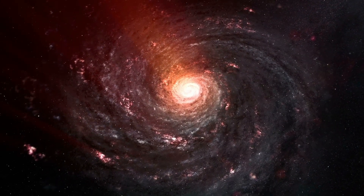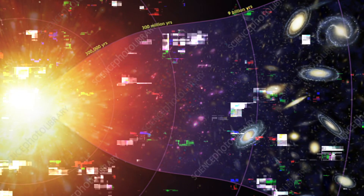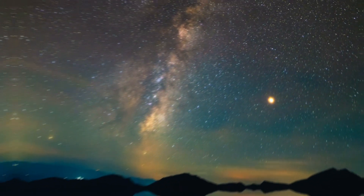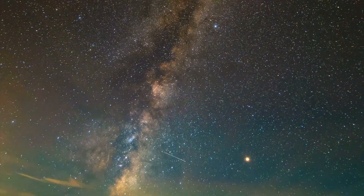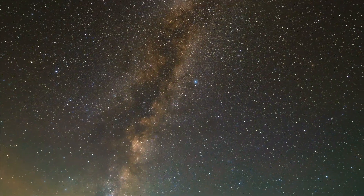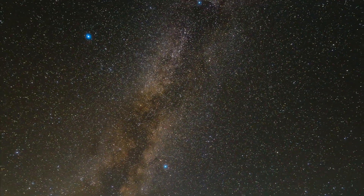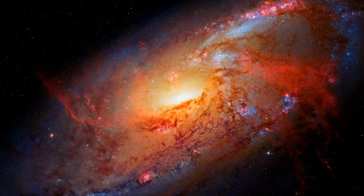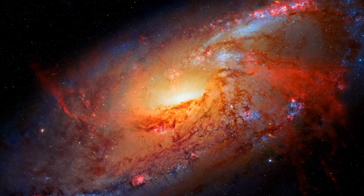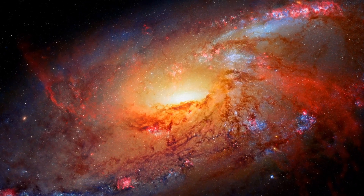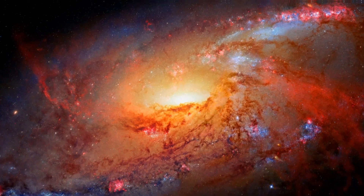Astrophysicists believe that supermassive black holes were among the earlier cosmic objects in the universe, with many forming around the 1 billion years mark in the universe's lifetime. If this is true, then many of the galactic black holes have been around since the early dawn of time, when the first stars were being forged in the expansion of the cosmos. Such theories answer a lot of questions about the formation of supermassive black holes, but there are still big gaps in our understanding of why they exist and how they manage to grow so large.